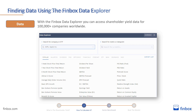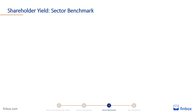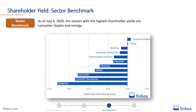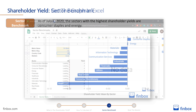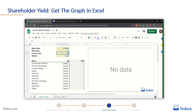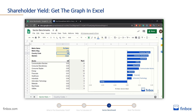The average shareholder yield varies greatly among different sectors, so it is very useful to compare a company to its sector while evaluating its shareholder yield. As of July 4th, 2020, the sectors with the highest shareholder yields are consumer staples and energy. Not surprisingly, the shareholder yield is negative for all the other sectors, since companies have slashed dividends, halted buybacks and added debt to their balance sheets to survive the coronavirus crisis. You can have up-to-date stats and graphs like that directly in Excel or in Google Spreadsheets with the Finbox Excel add-in.